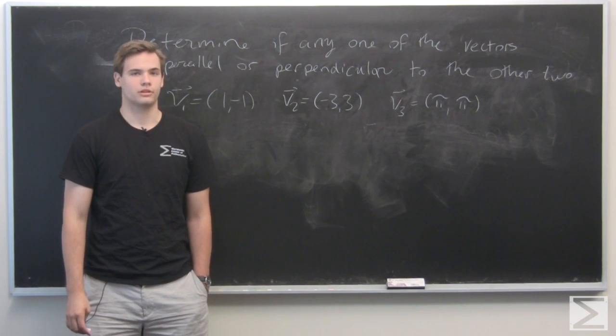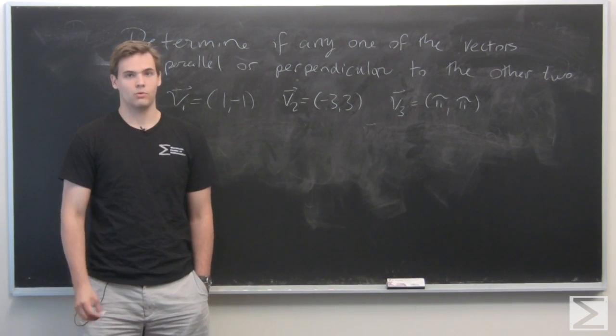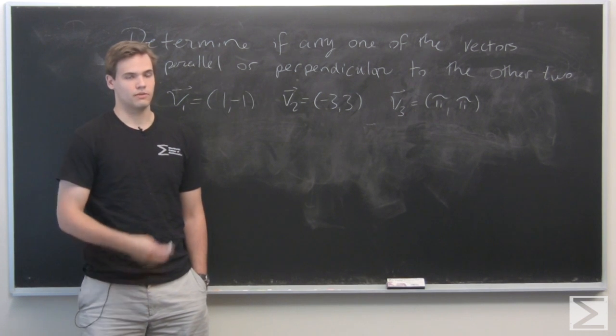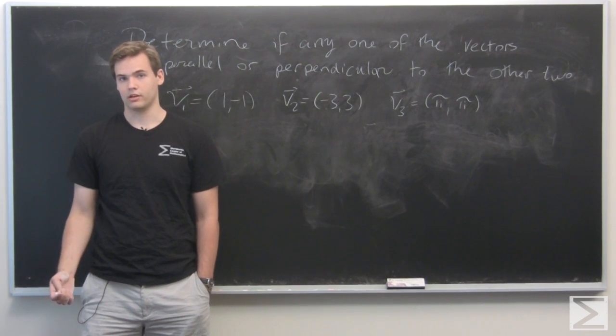Now that we've introduced the dot product on vectors in Rn, we can use this to determine whether any vector is parallel or perpendicular to another vector.